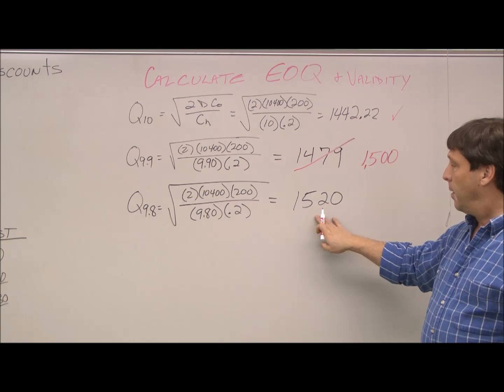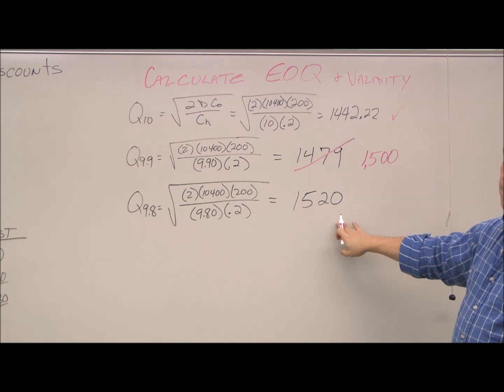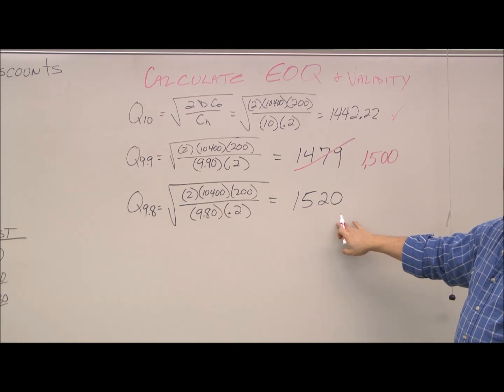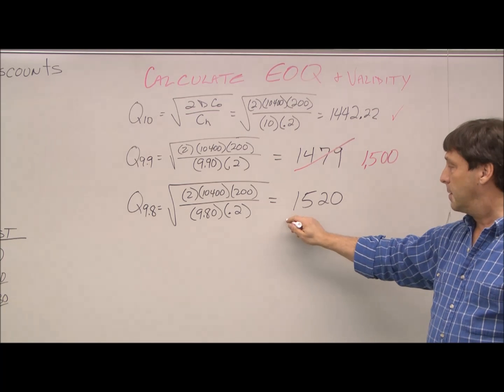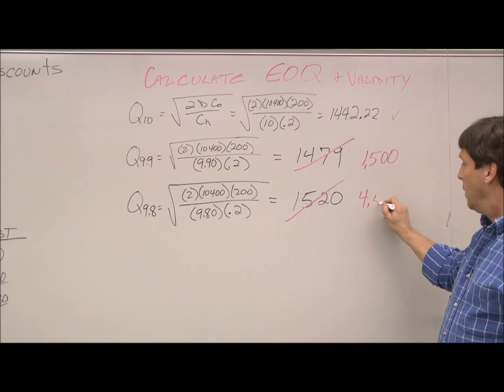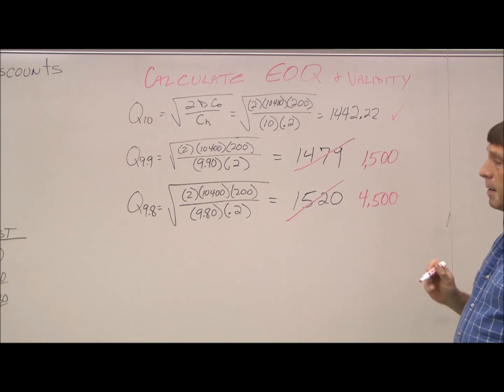Same with the third. Our third quantity discount is 4,500 and up. This is obviously less than that. It's not valid. We have to adjust to get to the minimum of that quantity range.